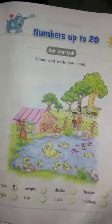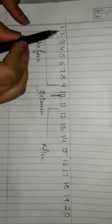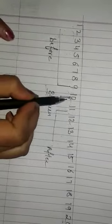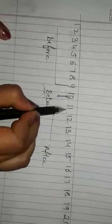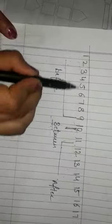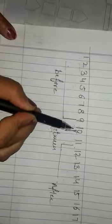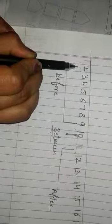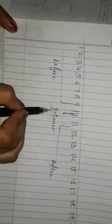We have a number line from 1 to 20. If we have number 10 as between, then all these numbers after number 10 are after numbers, and these numbers are all before numbers. And 10 is the between number.